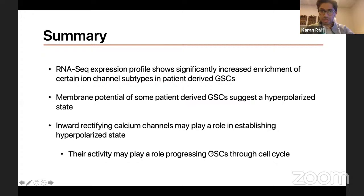So, in summary, these are general kind of conclusions, not a lot of robust data to support it, but RNA sequencing expression shows significantly increased enrichment of certain ion channel subtypes and patient-derived GSCs. Membrane potential for some of these GSCs may suggest that they live at a hyperpolarized state. Maybe these inward rectifying, that's a typo, inward rectifying potassium channels, play a role in establishing a hyperpolarized state, and maybe they play a role in progressing them through the cell cycle.